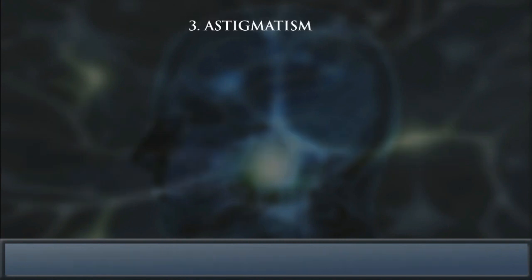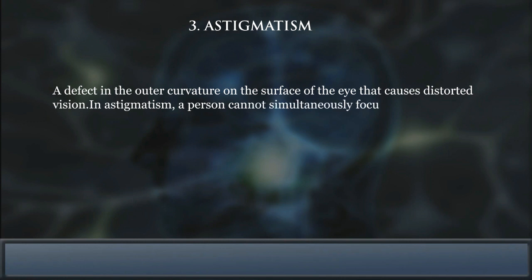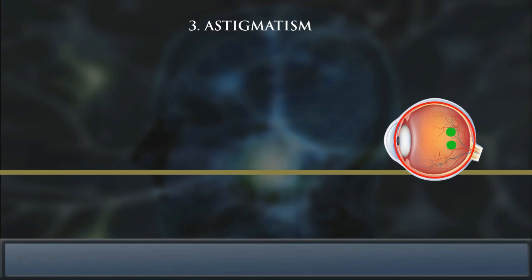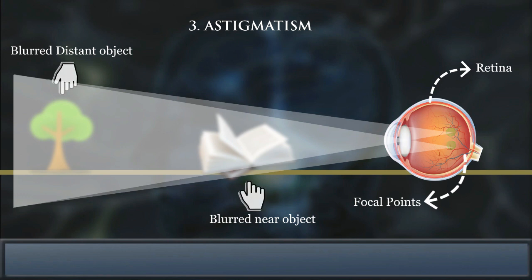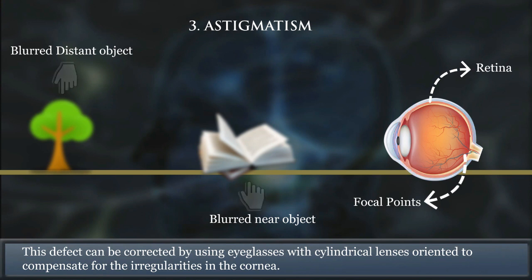There is another defect in the eye called astigmatism — a defect in the outer curvature of the surface of the eye that causes distorted vision. In astigmatism, a person cannot simultaneously focus on both horizontal and vertical lines. This defect can be corrected by using eyeglasses with cylindrical lenses oriented to compensate for the irregularities in the cornea.